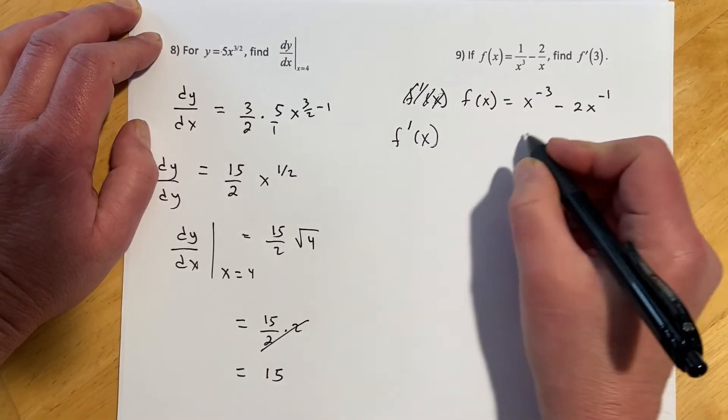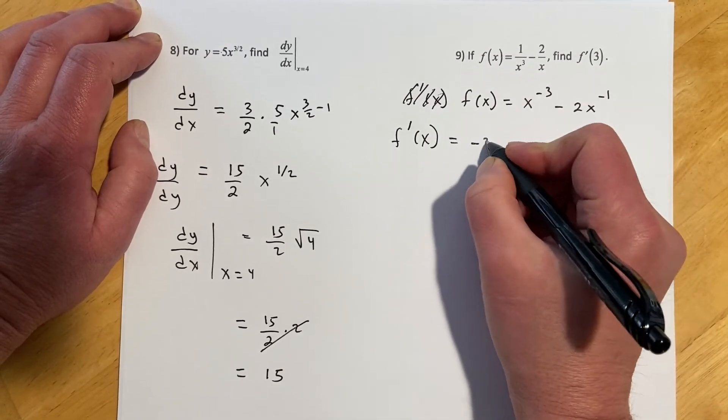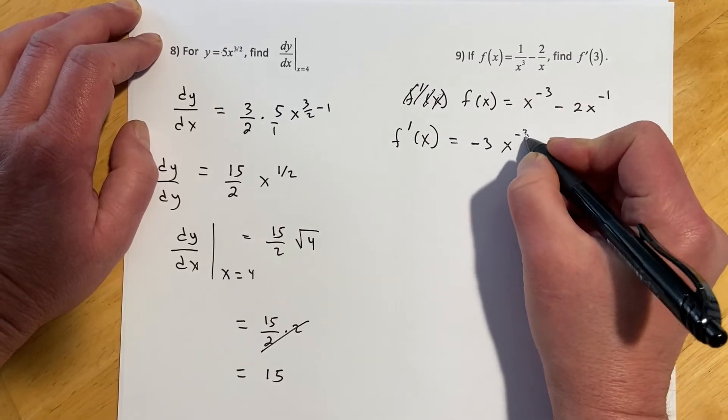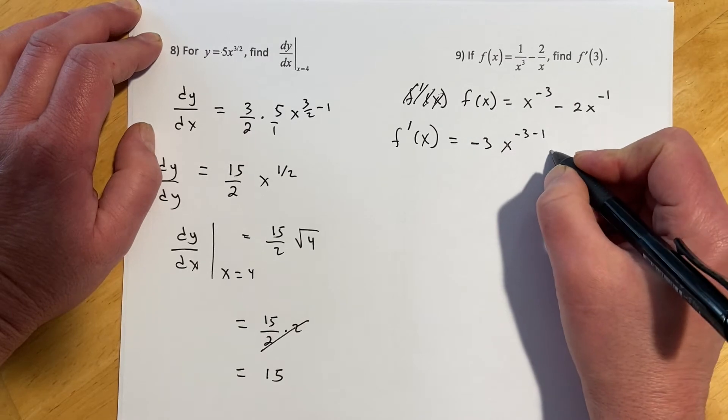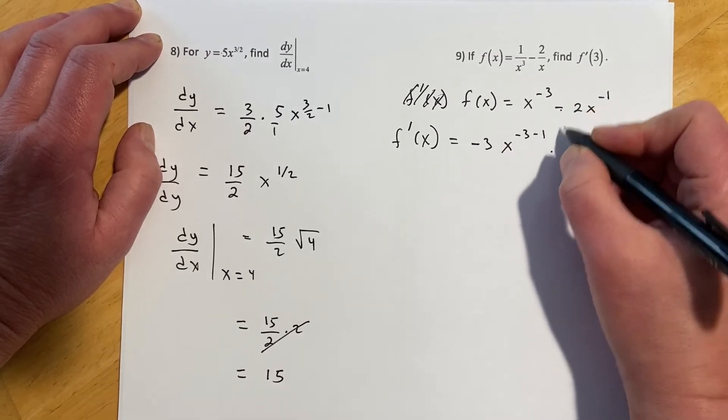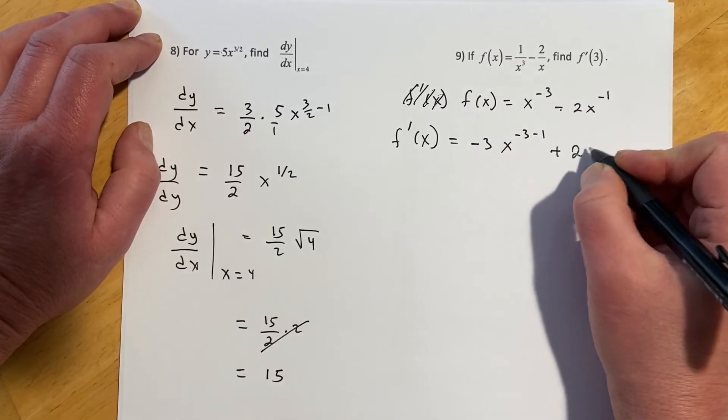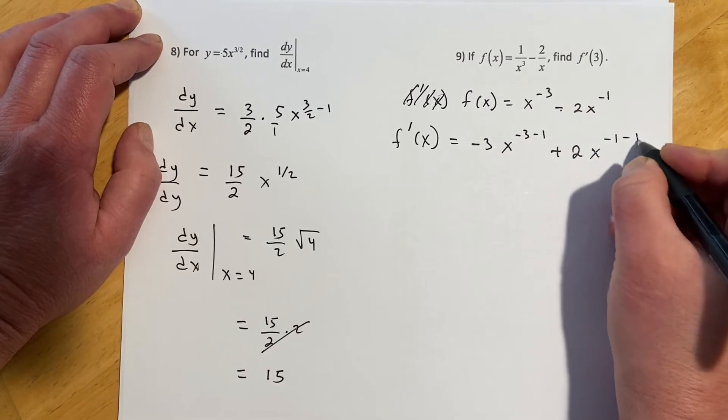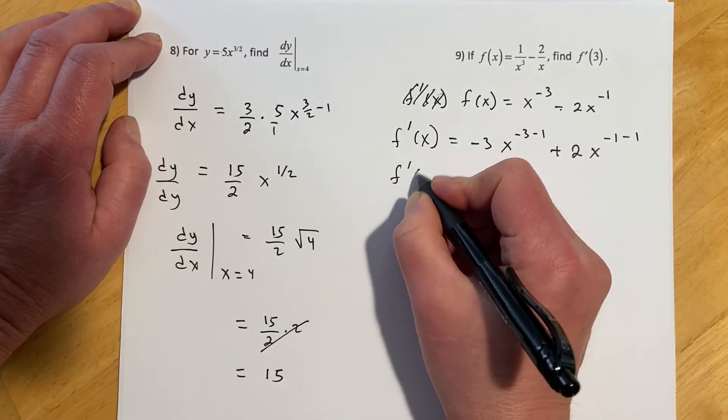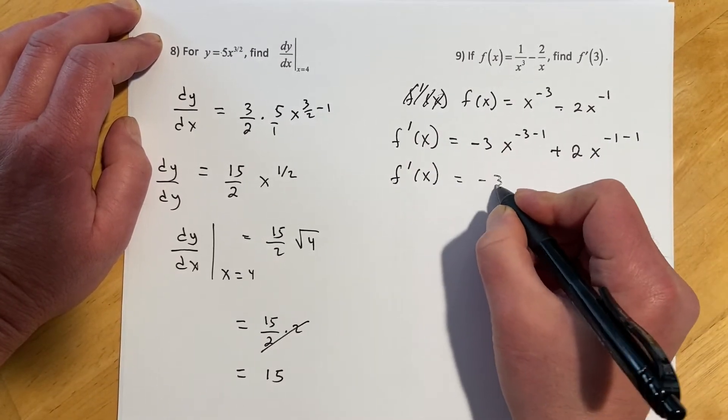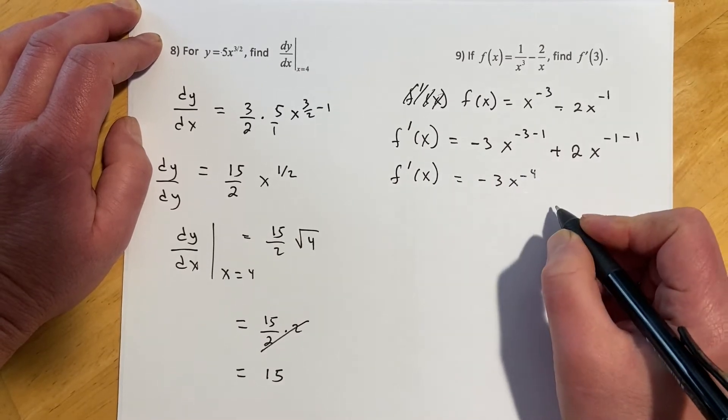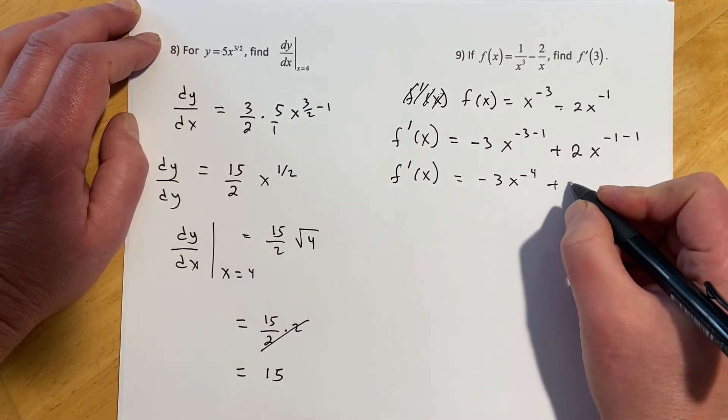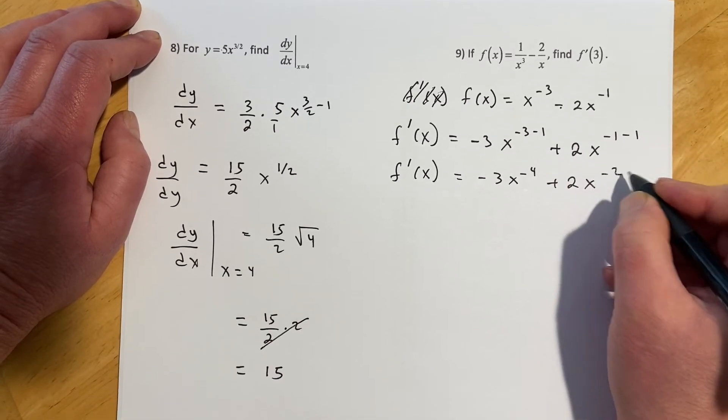f prime of x. So this is going to be negative 3x, and then negative 3 minus 1, and then this is negative times negative, so that's now positive 2x minus 1 minus 1. So f prime of x is going to equal negative 3x to the negative 4, and then plus 2x to the negative 2.